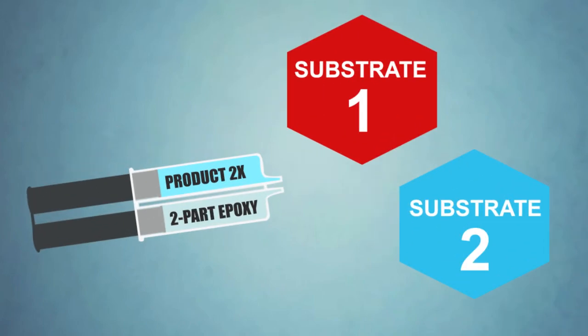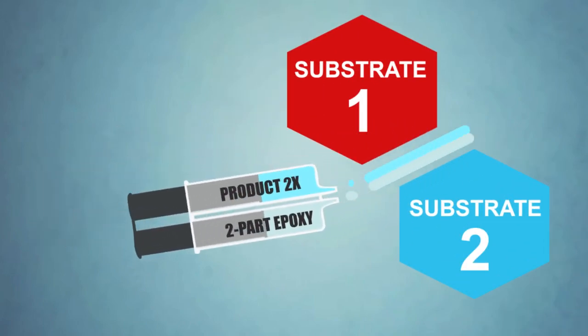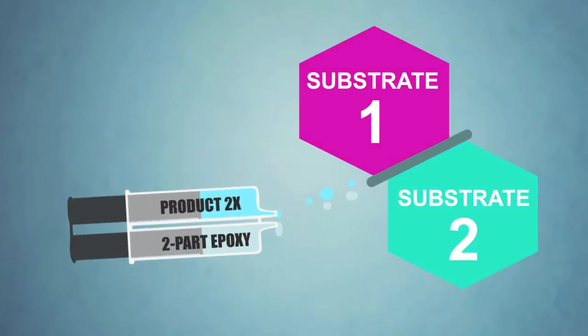Bob was using product 2X, a two-component rigid system that was difficult to handle and had a lot of waste.